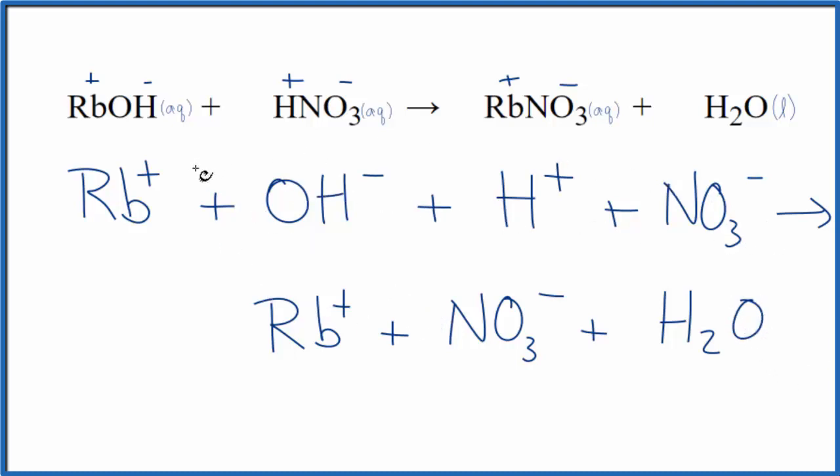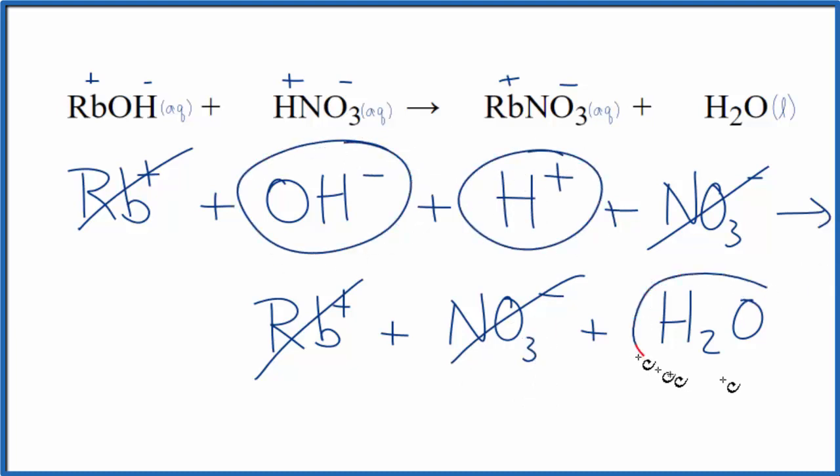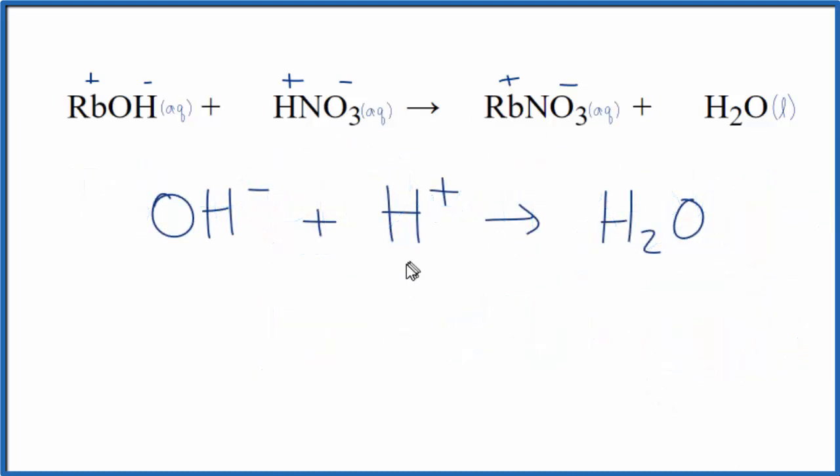We'll cross out the spectator ions. They're the same on both sides. So we have rubidium ion here in the reactants and in the products. Cross it out. Then we have the nitrate ion in the reactants and in the products. We cross that out. So we're left with this OH minus, H plus, and then that yields H2O. That is our net ionic equation. We can clean this up and write it like this. So this would be the net ionic equation. Usually you'll see the H plus written first. Let's do that. And this would be the net ionic equation for RbOH plus HNO3.